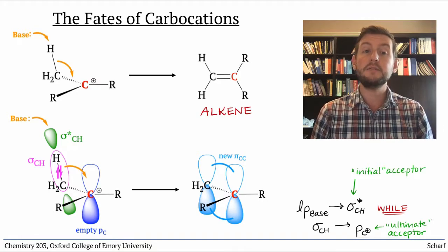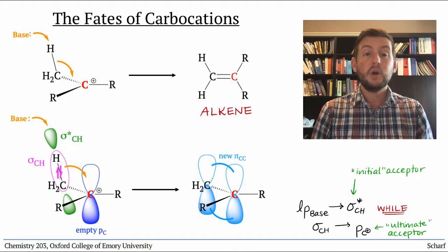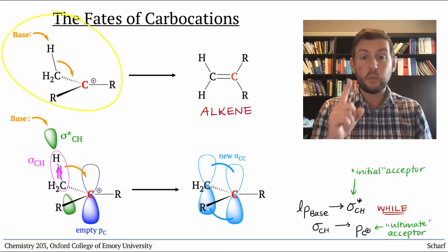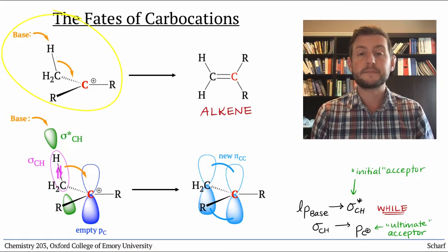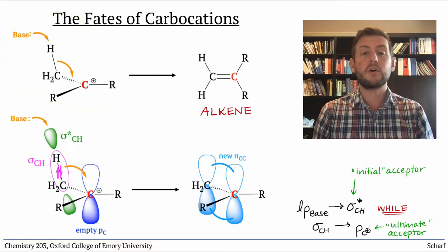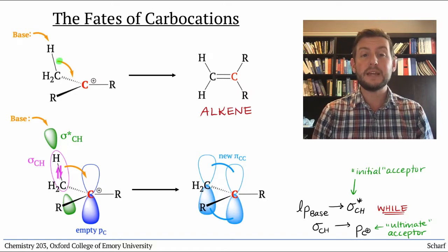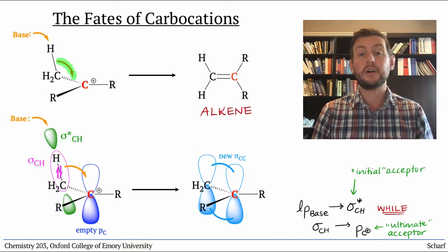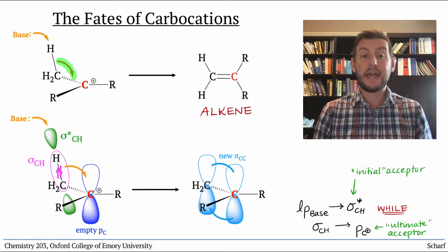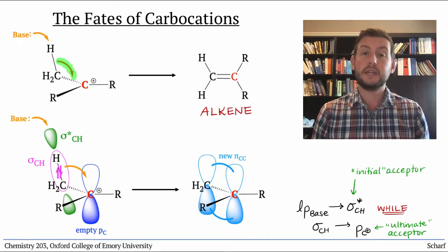Since the orbitals have to all align in a particular orientation for the reaction to happen, we draw all the arrows in one step, like this. Notice that I'm drawing the second arrow to the space between the alpha carbon and the carbocation. This is because the electrons end up between those two carbons in a pi bond.